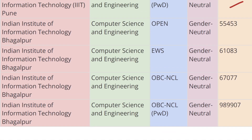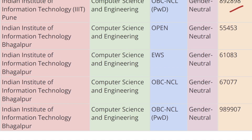Moving ahead, we have IIIT Bhagalpur. For Open category the cutoff rank is 55,453, for EWS category the cutoff rank is 61,083, for OBC-CL the cutoff rank is 67,077, and for OBC-CL PWD category the cutoff rank is 9,89,907.